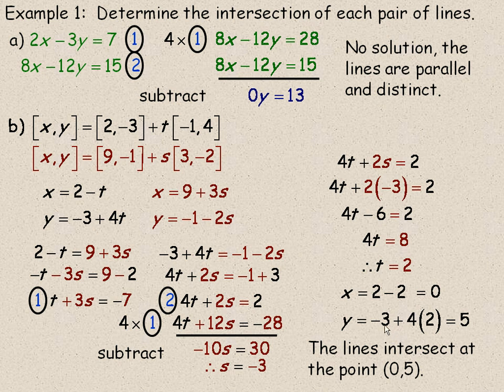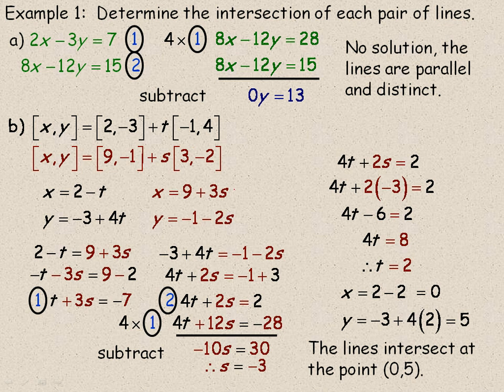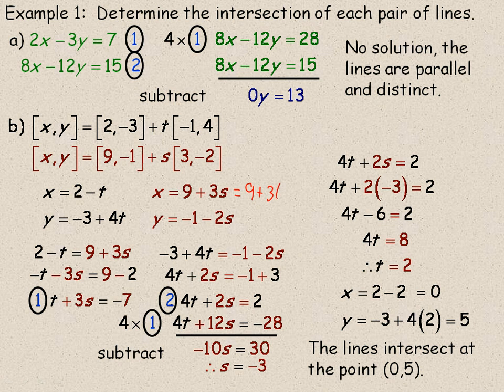Now to check to make sure this is right and this is a really good check. Take the negative 3 and put it up here in place of s. And of course we should still get (0, 5). So if we put it here we would get 9 plus 3 times negative 3. And so we are adding 9 and negative 9 so that certainly does give you a 0.